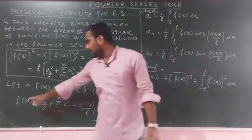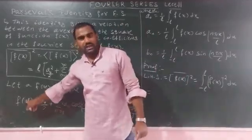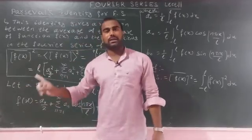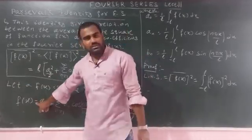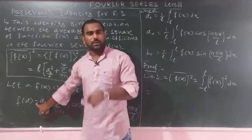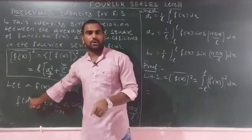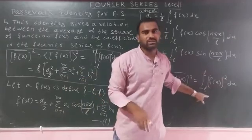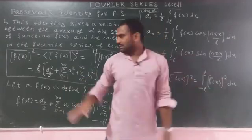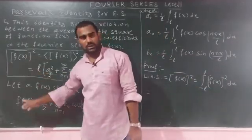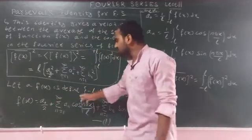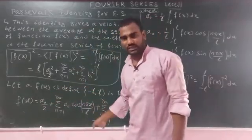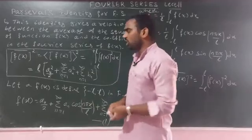We multiply both sides of equation 1 by f(x), then integrate from minus l to l. So f(x) multiplied by each side, integrated from minus l to l. On the right-hand side, f(x) is also multiplied by each side and integrated from minus l to l.